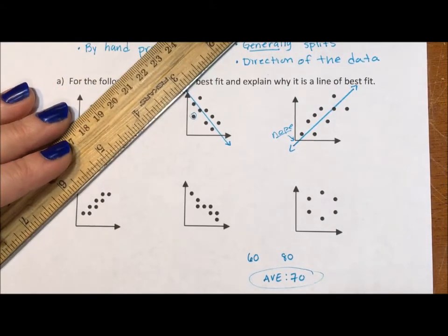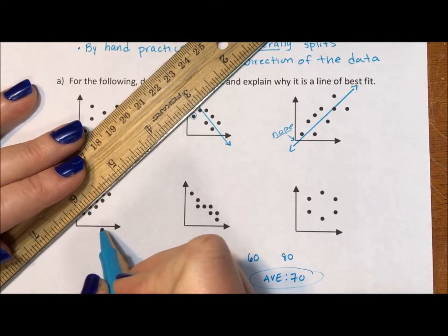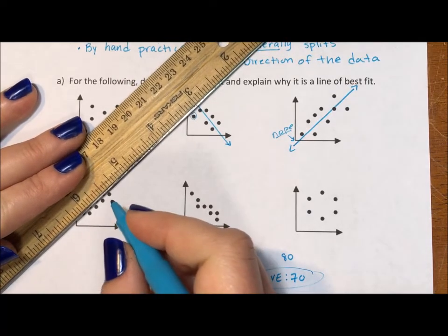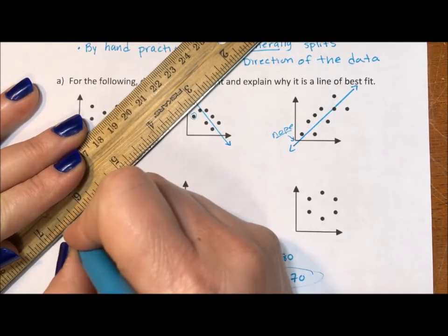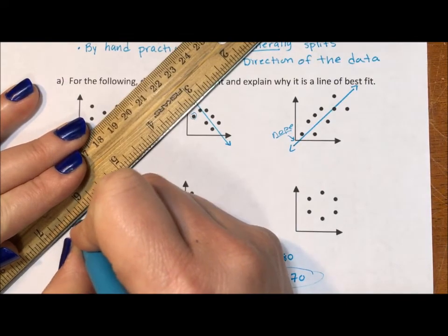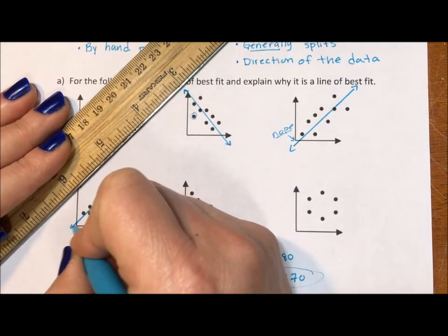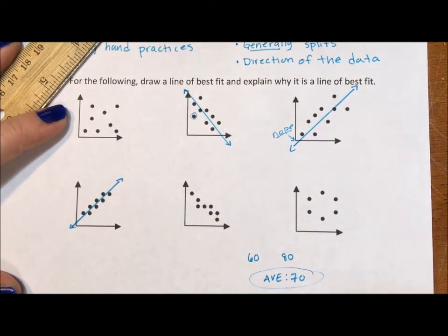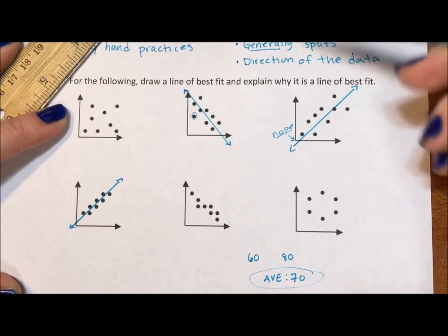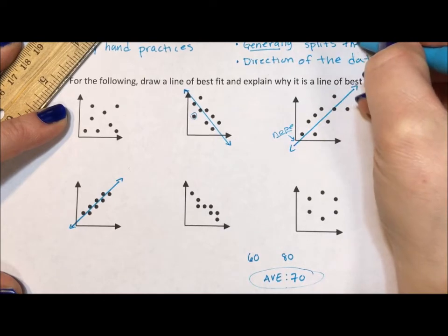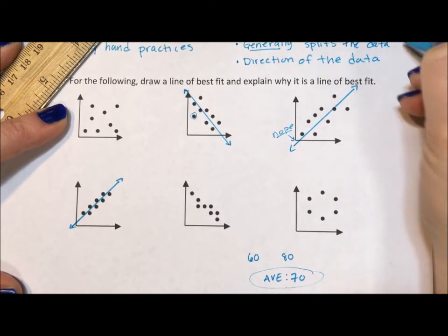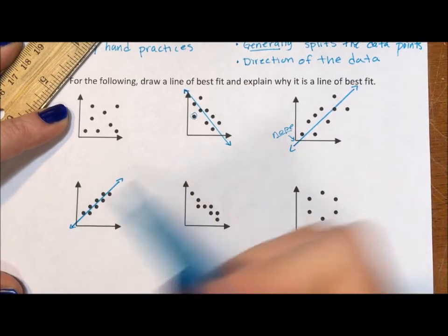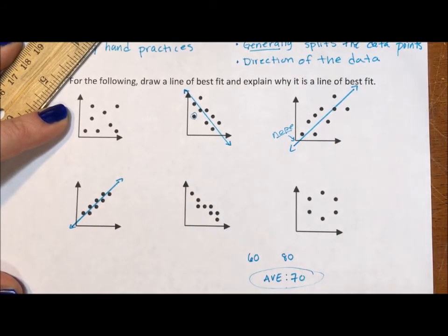For this one, these are so nicely parallel. I'm going to do the parallel line right smack dab down the middle. Again, I'm not hitting the origin. Again, I'm not hitting any of the points. I'm splitting them. It's kind of like us versus them. That's the line in the sand. No points are touched in this line. The origin is not touched in this line. We are splitting the points, generally splits the data points. Generally splits the data points, direction of the data, not going through any points. That's not a criteria.